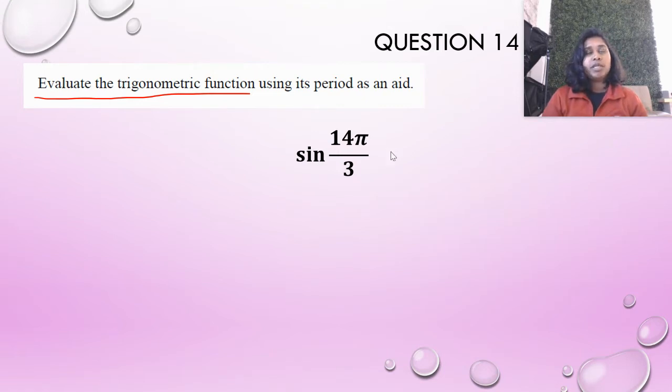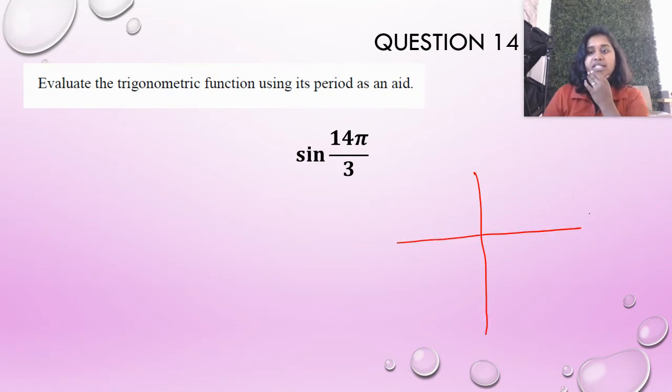Evaluate the trigonometric function using its period as an aid. That seems like a complicated statement, but I really just need to focus on evaluate the trigonometric function. So basically solve sine of 14π over 3. Well, that's a little difficult because 14π over 3 doesn't live on the unit circle, does it? If I go around and I said that this was 0 over 3, this is 3 over 3, and this is 6 over 3, right, because if I come back around it's a circle, it's going to continue going on.